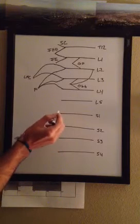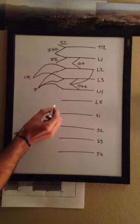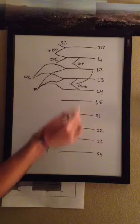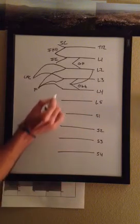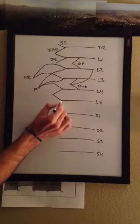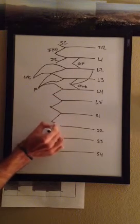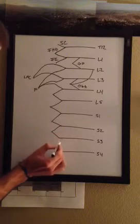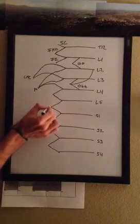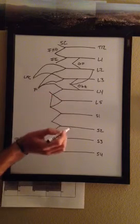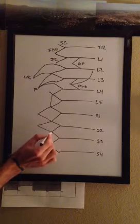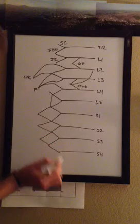From here, starting from L4 like we started with the sacral plexus, you'll draw a mountaintop here, mountaintop here, mountaintop here, mountaintop here, and mountaintop there. Go ahead and draw a line up, a point there, mountaintop here, mountaintop there.